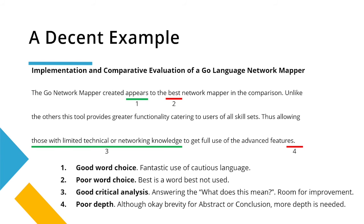Moving on, here's a decent example — another four aspects to speak about. This report looks at creating and then evaluating a network scanning tool. Firstly, this example employs excellent use of cautious language. Whenever making a point, don't treat it like the gospel — try to be cautious. Say it appears to be the leading network mapper. It gives you a little bit of wiggle room to be wrong, but still correct. Kind of like a politician.